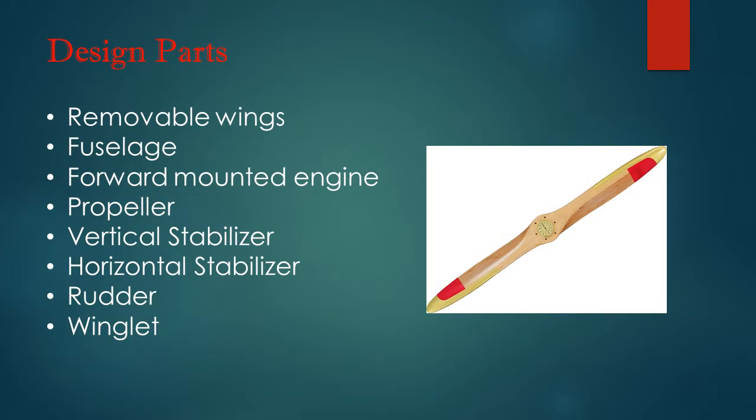These are the parts that we use to design our aircraft. We have the removable wings, fuselage, forward mounted engine, a propeller, a vertical stabilizer, a horizontal stabilizer, a rudder, and a winglet.